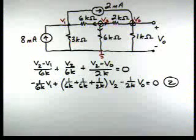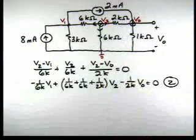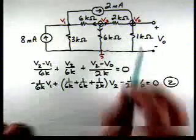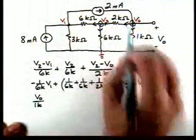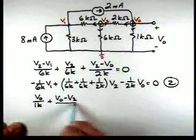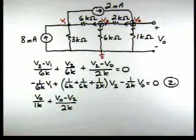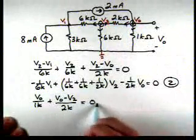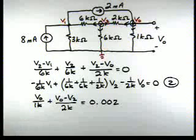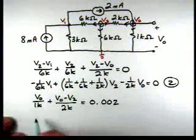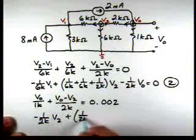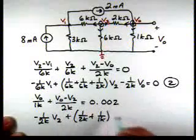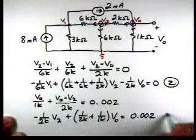Now our third equation we'll get by applying KCL at this node. So again, let's sum currents leaving through resistances. So if we have this current, we have V0 over 1K. And then we have a current leaving here, this V0 minus V2 over 2K. And we have a current source entering. So that comes out to be 0.002 on the right-hand side. And then let's collect up common terms. So this becomes minus 1 over 2K times V2 plus 1 over 2K plus 1 over 1K times V0 is equal to 0.002. So there's our third equation.